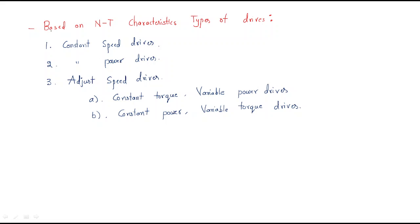Hello everyone. We will discuss the next topic based on speed-torque characteristics and different types of drives. A drive means simply an electric motor combined with a controller. Generally we use a power electronic controller, and this combination of controller and motor we call a drive.